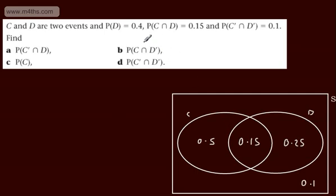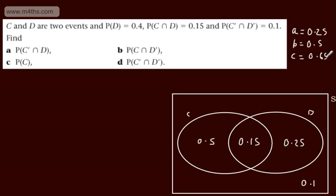The only remaining region is C only, which gives us 0.5, since 0.4 plus 0.5 plus 0.1 all add up to 1. Part A asks for P(D∩C'), which is the D-only region: 0.25. Part B asks for P(C∩D'), the C-only region: 0.5. P(C) is 0.5 plus 0.15, giving 0.65. And P(C'∩D'), given in the question, is 0.1. We didn't even need the addition formula here.